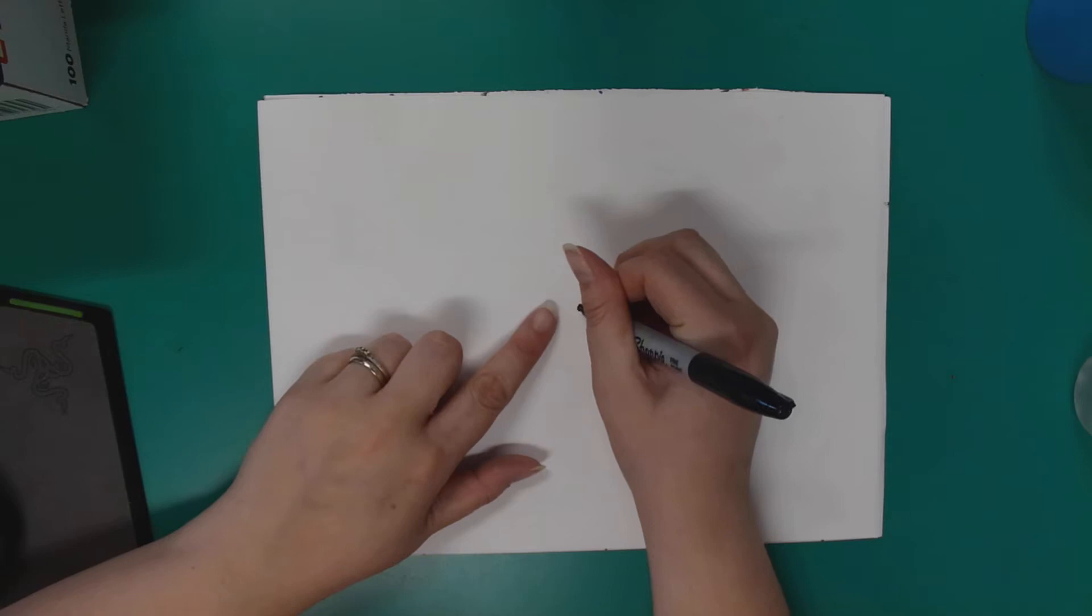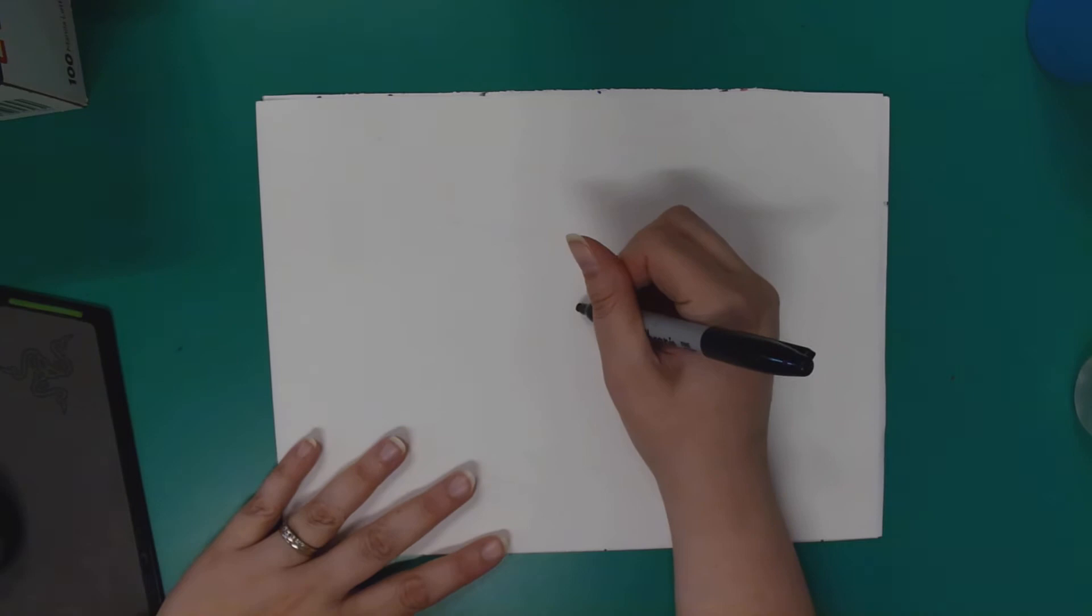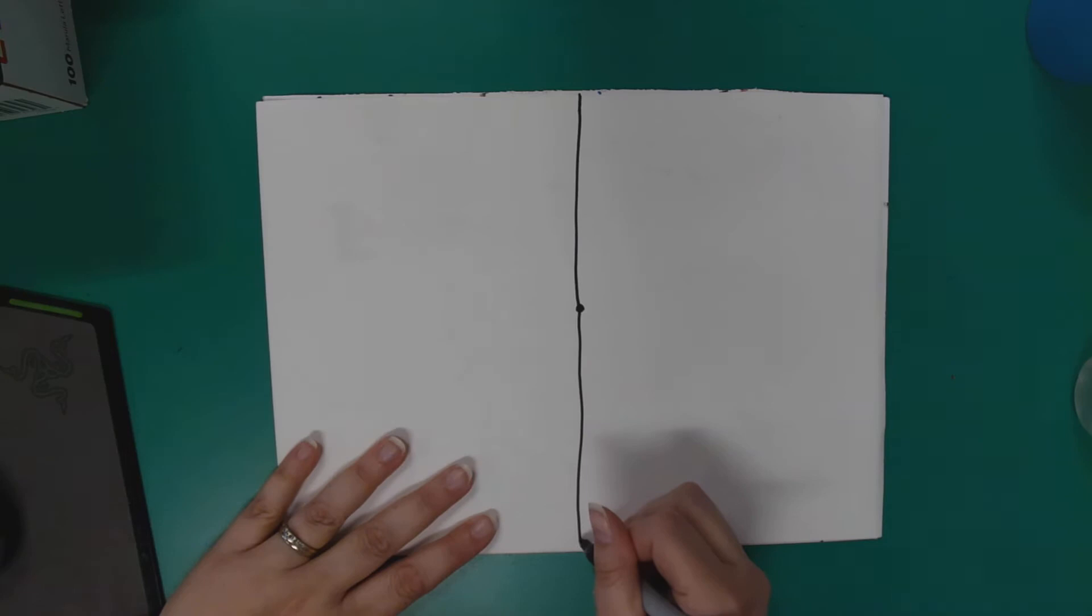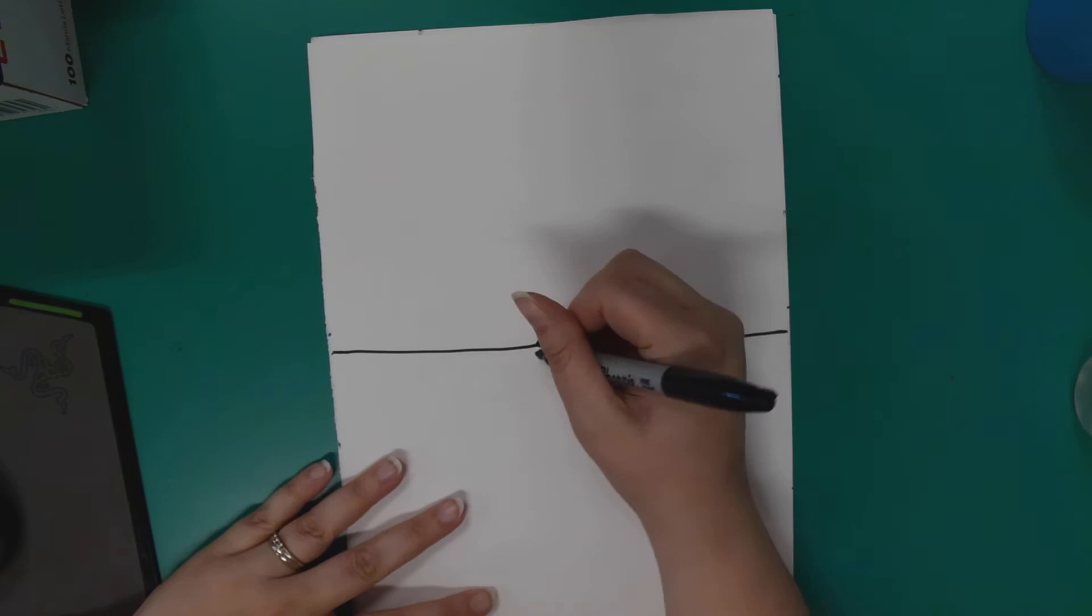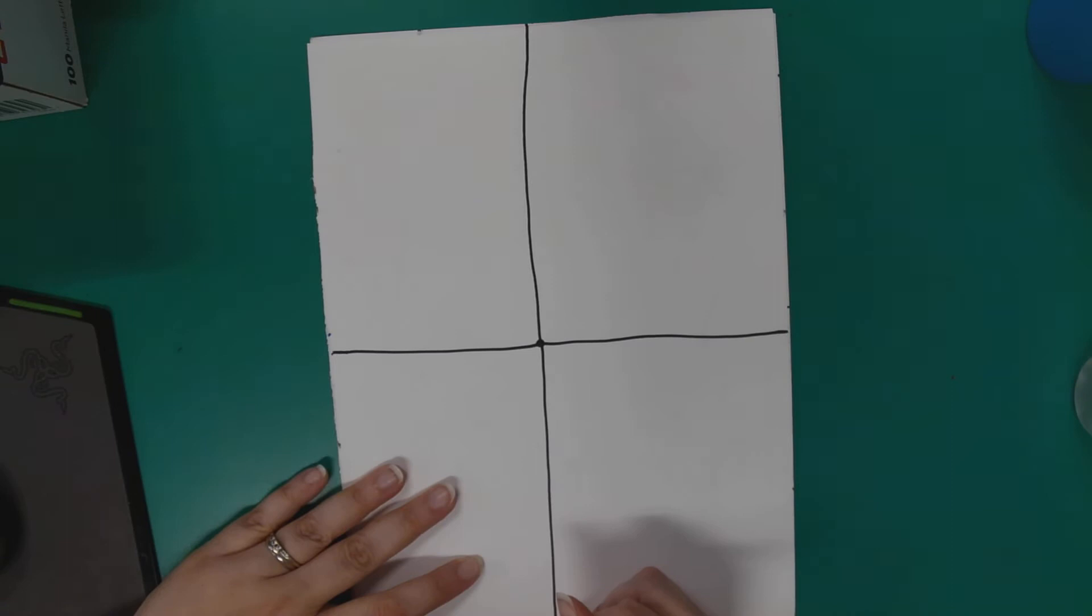First thing we do is find the center of the paper, right about there. You're going to draw a dot. Simple. Then from there, you're going to draw a line that goes up and down. Turn your paper, and we're going to draw again, up and down.